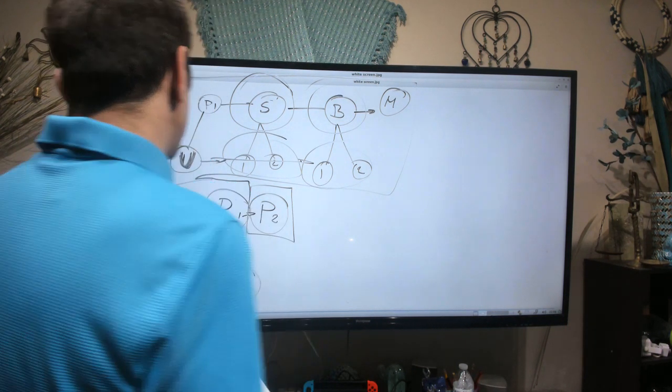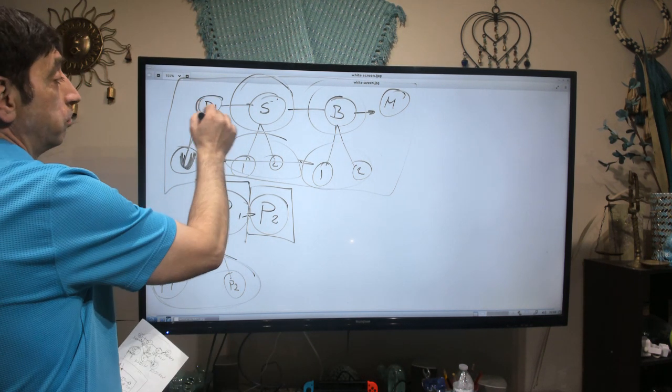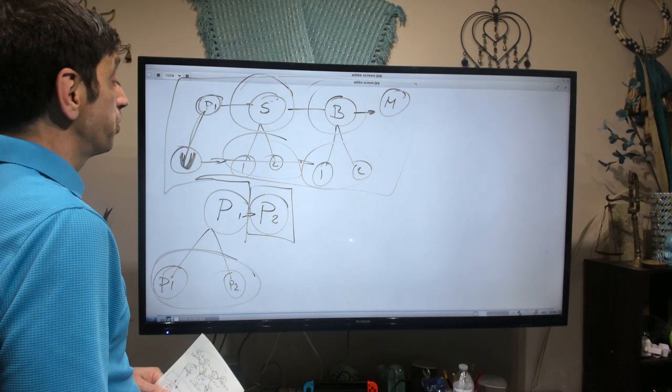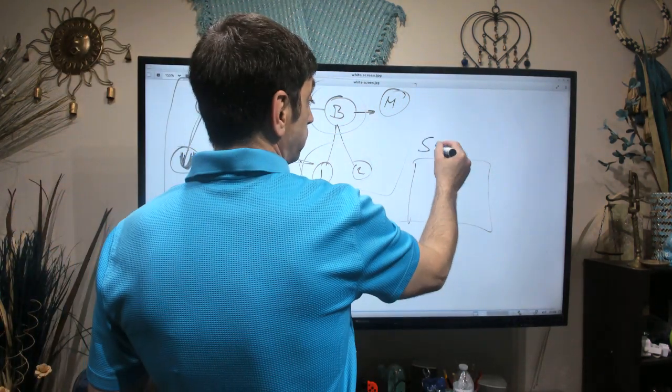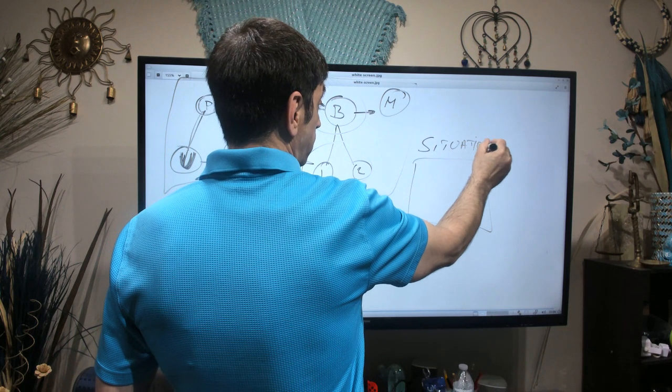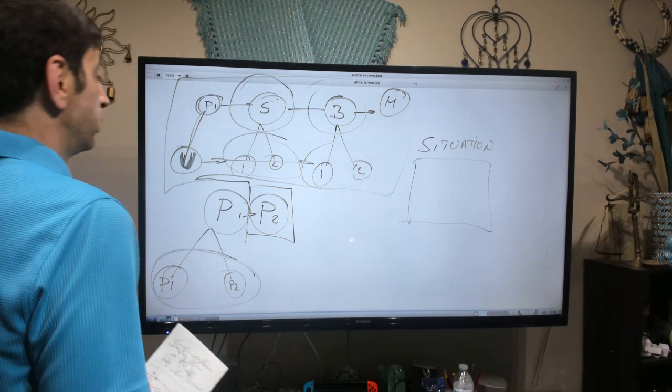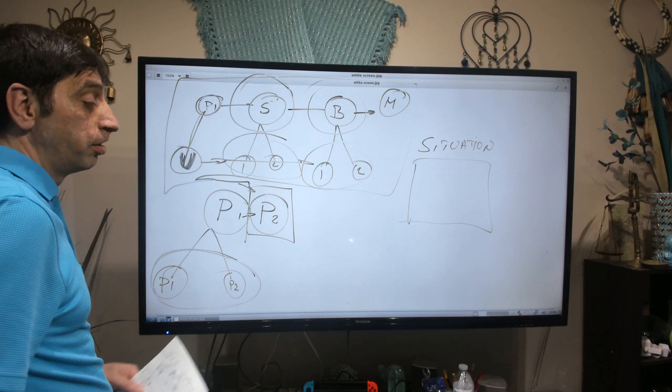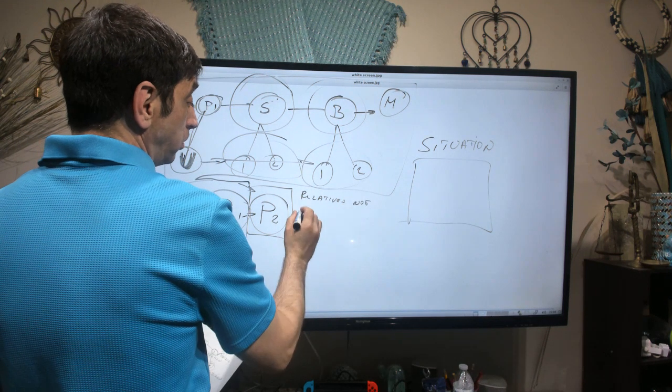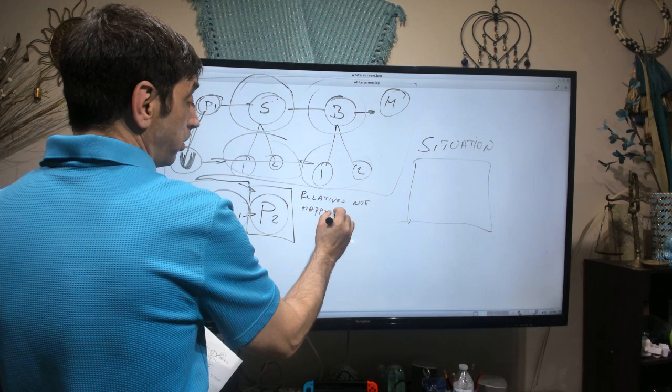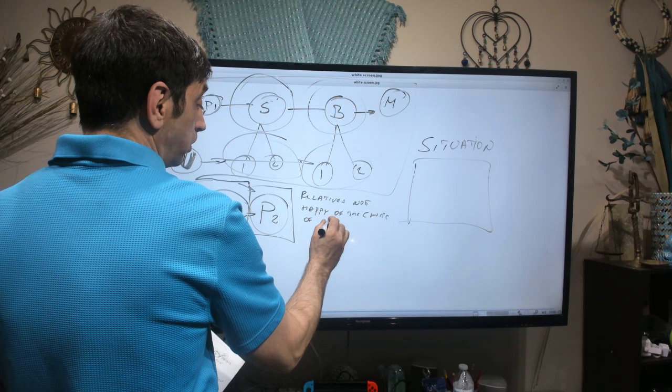So what happens is you go back into your parent one and you're like, we need to fix this. We need to fix this situation because right now we have something we need to deal with. We have a situation that we all have to come together. We all have to come together. We need to discuss things. So what was the original issue? The original issue was relatives not happy of the choice of partner.